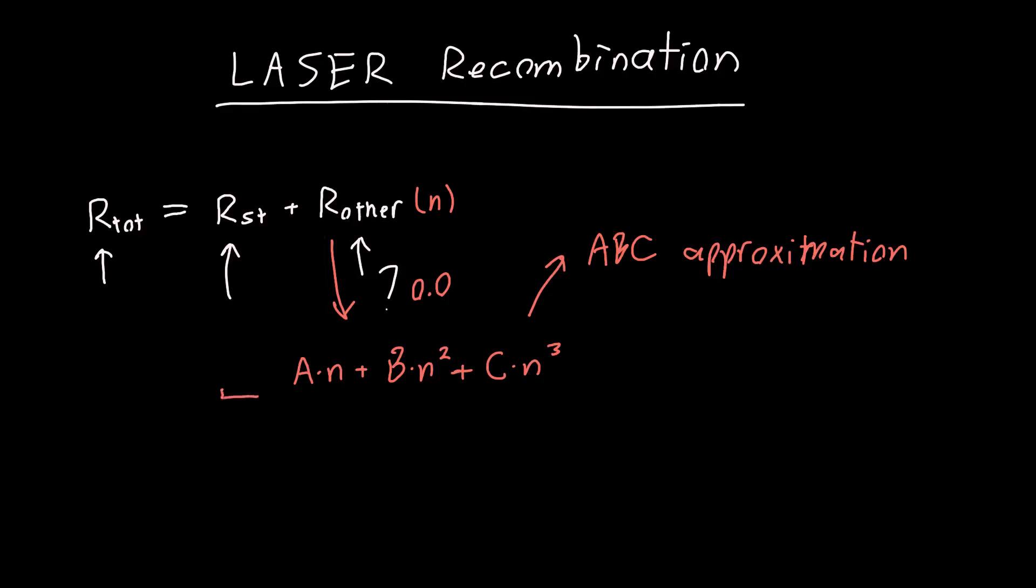Now you might say why is there no constant term, like why is there no like a naught here that's not proportional to n. And the answer is that if you don't have any carriers, you can't have them recombine. No recombine. So we can't have a constant carrier recombination that's not proportional to the carrier density, that would be non-physical.